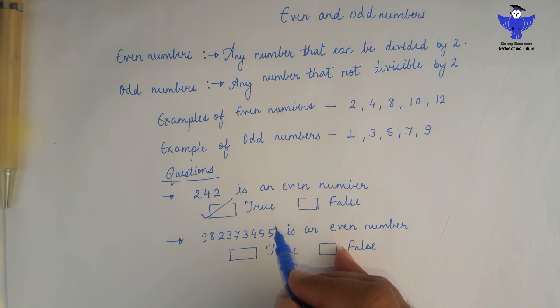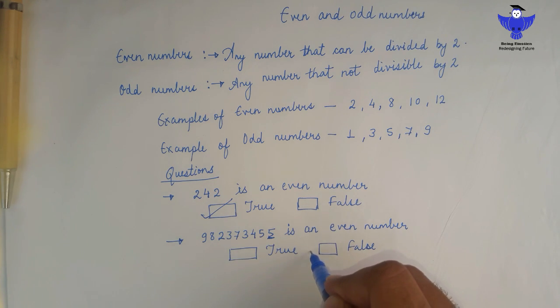An easy trick is that the last digit is 5. If you divide this by 2, the remainder is not 0. Hence, it is not an even number. So the answer is false.